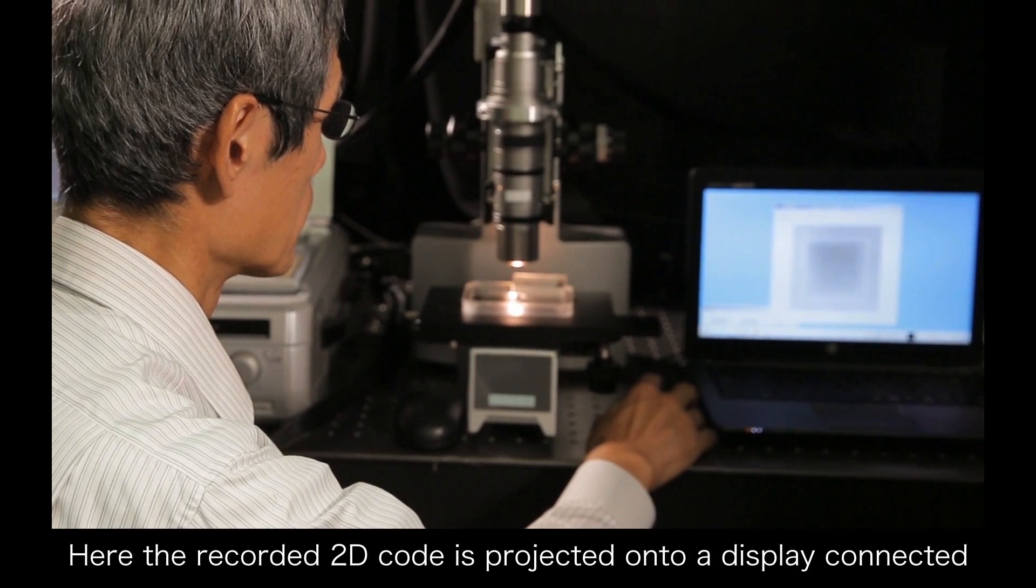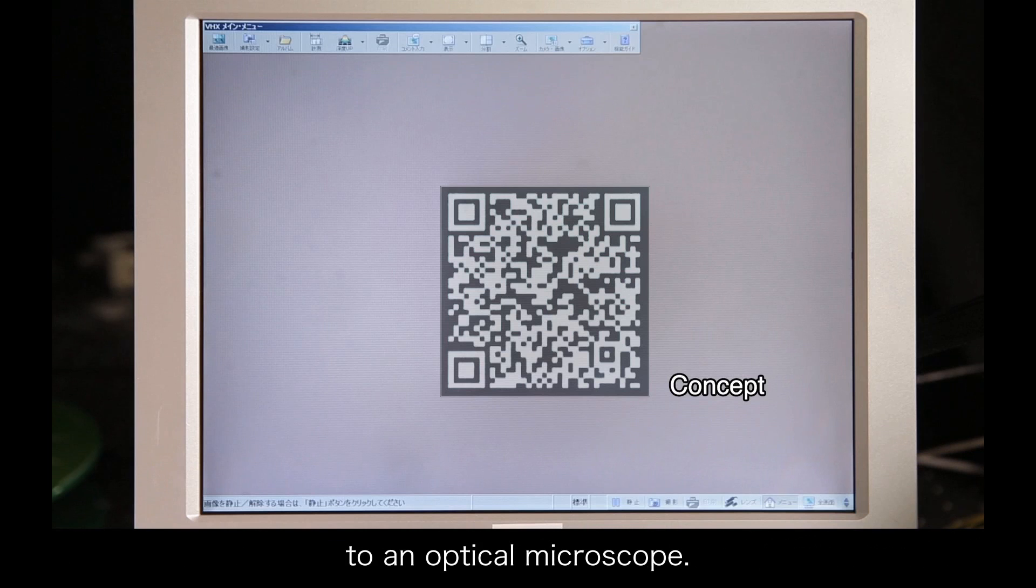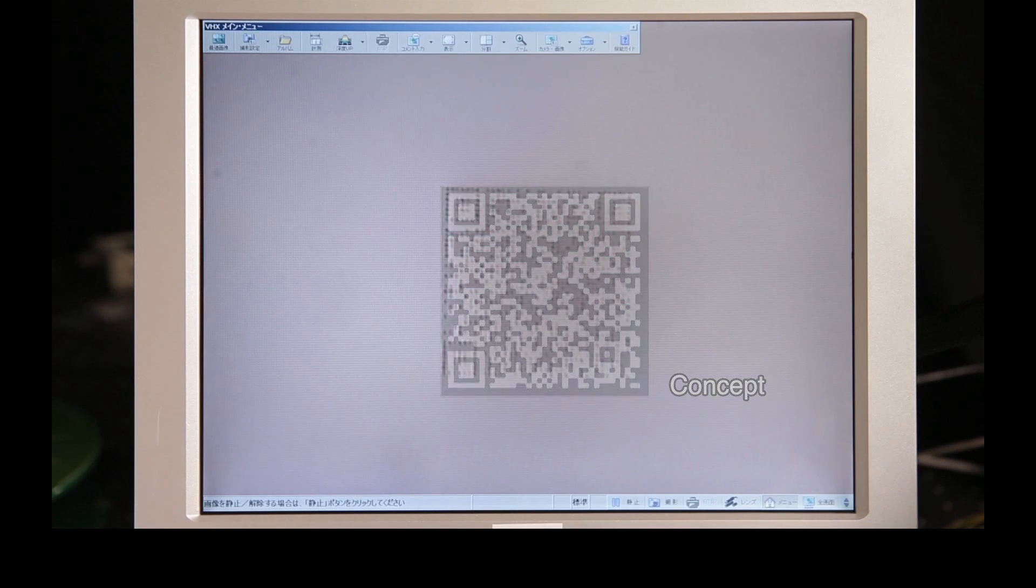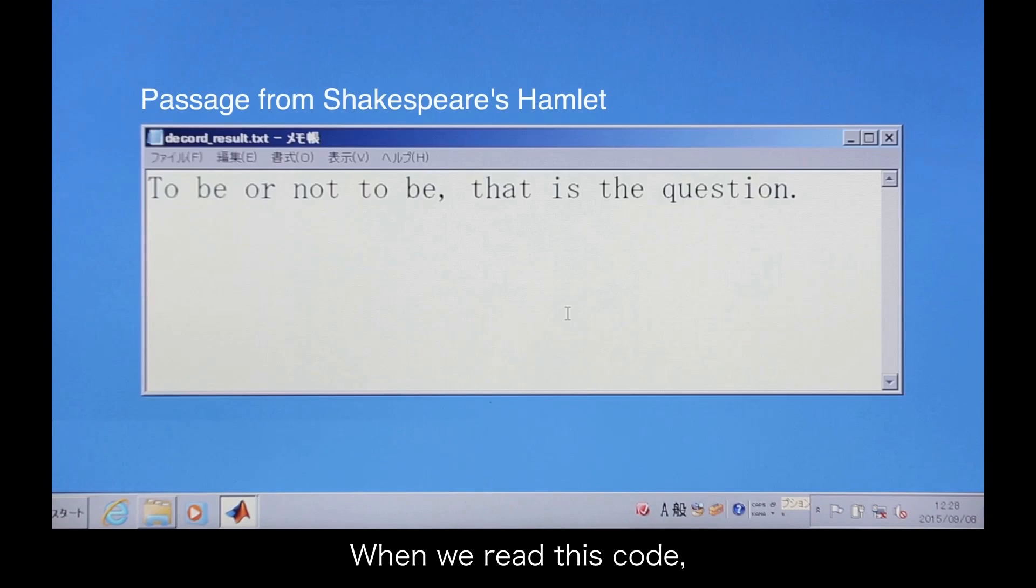Here, the recorded 2D code is projected onto a display connected to an optical microscope. When we read this code, the original text data is played back.